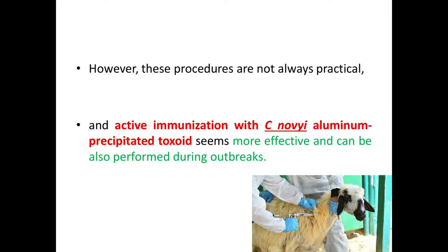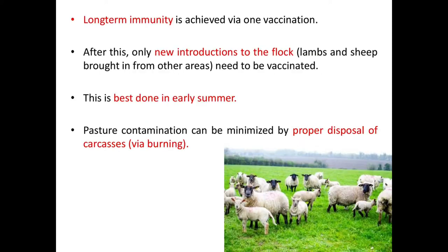However, these procedures are not always practical to control the Lymnaea and reduce fluke infestation. Active immunization with Clostridium novyi aluminium-precipitated toxoid seems more effective and can also be performed during outbreaks.